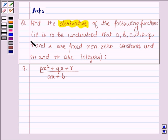find the derivative of the following functions. It is to be understood that A, B, C, D, P, Q, R and S are fixed non-zero constants and M and N are integers.